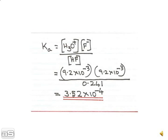The dissociation constant Ka equals H3O plus times F minus divided by HF. We have already calculated H3O plus, which equals F minus, as 9.2 times 10 to the power of minus 3. Inserting all these values into the equation, we get Ka equals 3.52 times 10 to the power of minus 4.